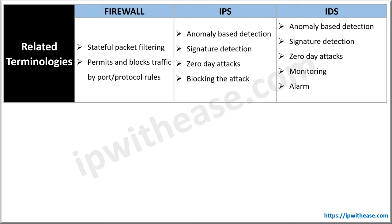Now that we have a high-level understanding of the three essential security components, let's reiterate the key features and functionality of each. Firewall-related terms include stateful firewall filtering and inspection — it permits and blocks traffic based on ports and protocol rules. IPS-related terms include anomaly detection, signature detection, zero-day attack monitoring, and alarm generation.